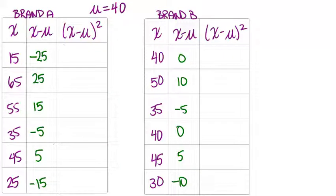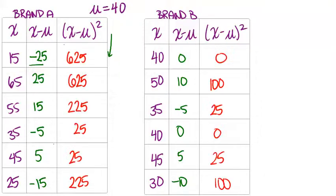Now that we have each of those distance differences, we're going to square each of those values and fill that in in the last column of each table. That means we have to figure out what's negative 25 squared, 25 squared, 15 squared and so on. Keep in mind that these numbers should always be positive because any number squared will be positive.